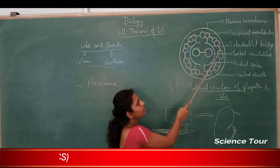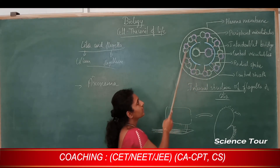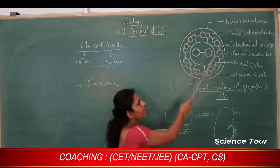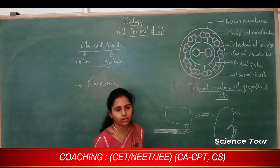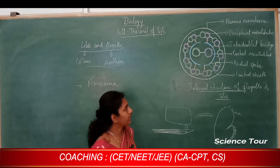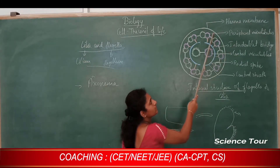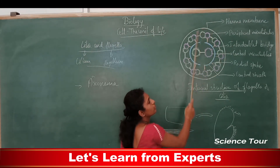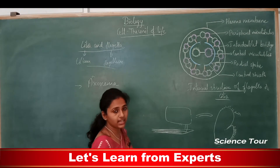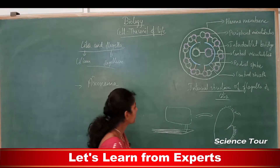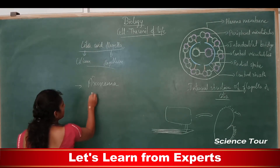In the peripheral region, you can see nine pairs of peripheral microtubules. Each pair of microtubules is called a doublet, so there are nine peripheral doublets in total.